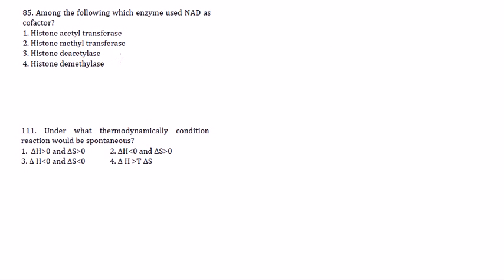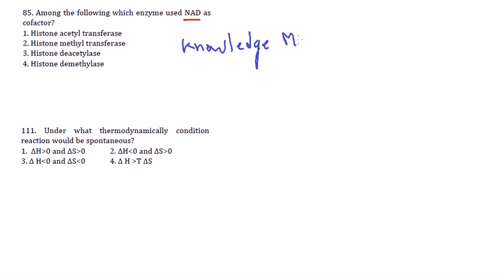The third type of question is: among the following, which enzyme uses NAD as a cofactor? For this question you need some understanding of why NAD is a cofactor for many different enzymes. You can apply personal knowledge, but you also need to know that NAD and NADPH usage varies across reactions. This is a Knowledge Memorizing or KM type of question.